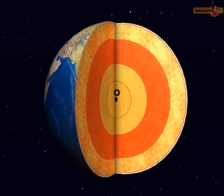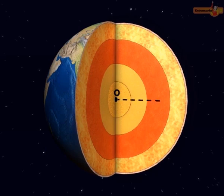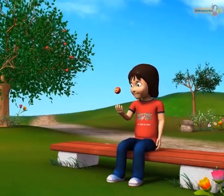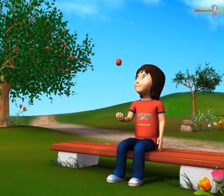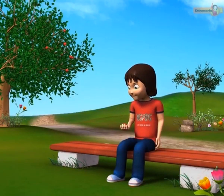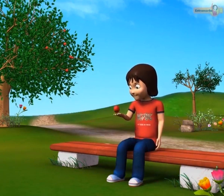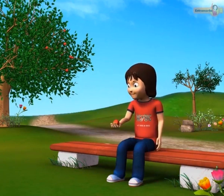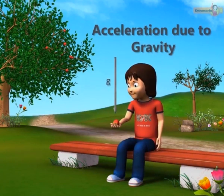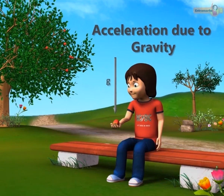O is the centre of the earth and R is the radius of the earth. Acceleration is produced in the objects which fall freely towards the earth. This acceleration of freely falling bodies is called acceleration due to gravity.